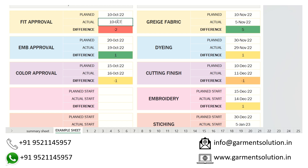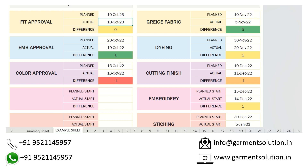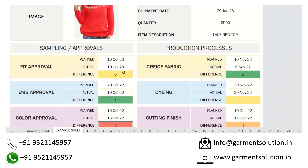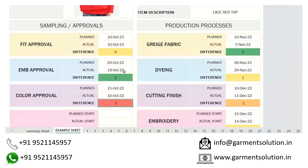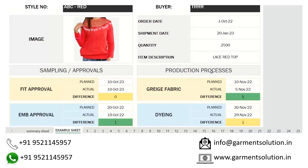I'm going to change the date here. Now this minus one is in delay, so it should show in red. This makes it easy to check which parts were delayed at the end when the shell was shipped, for better analysis.